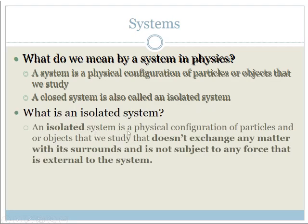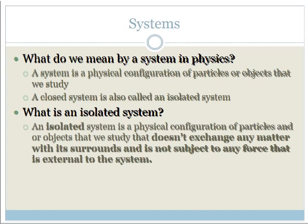An isolated system is a physical configuration of particles and objects that we study that doesn't exchange any matter that it surrounds and is not subject to any force that is external to the system. So just as we've learned about ideal gases, which are different from real gases, an isolated system is in an ideal world where we can look at a set of particles or objects and look at how they interact, assuming that there is no interaction with anything else around it.